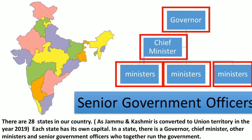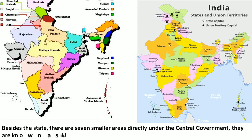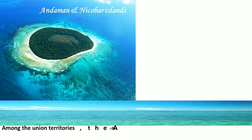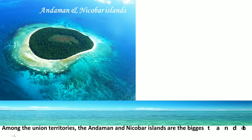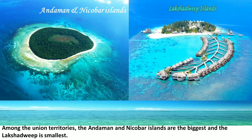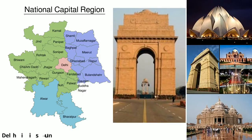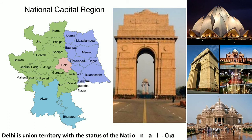Besides the states, there are smaller areas directly under the central government. They are known as union territories. Among the union territories, the Andaman and Nicobar Islands are the biggest and Lakshadweep the smallest. Delhi is a union territory with the status of national capital territory.